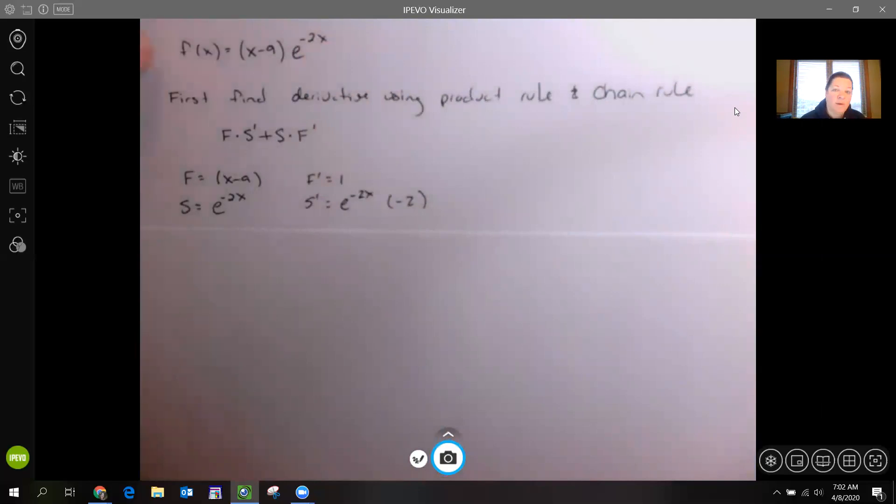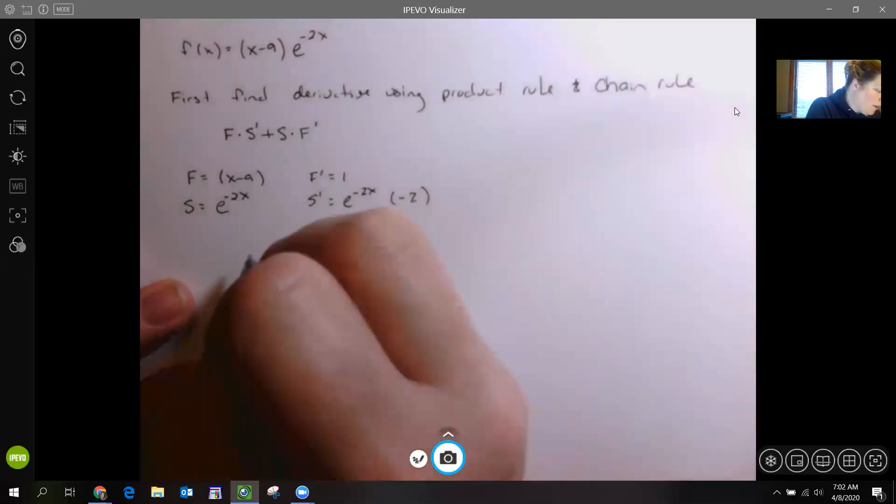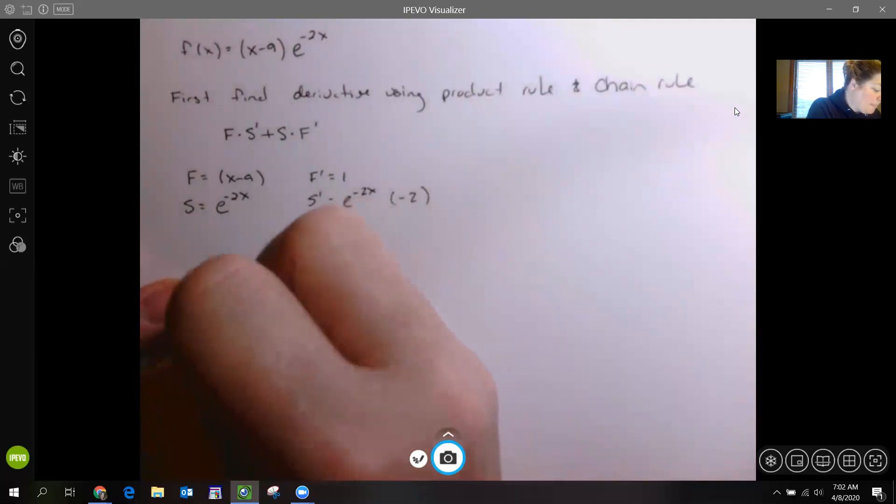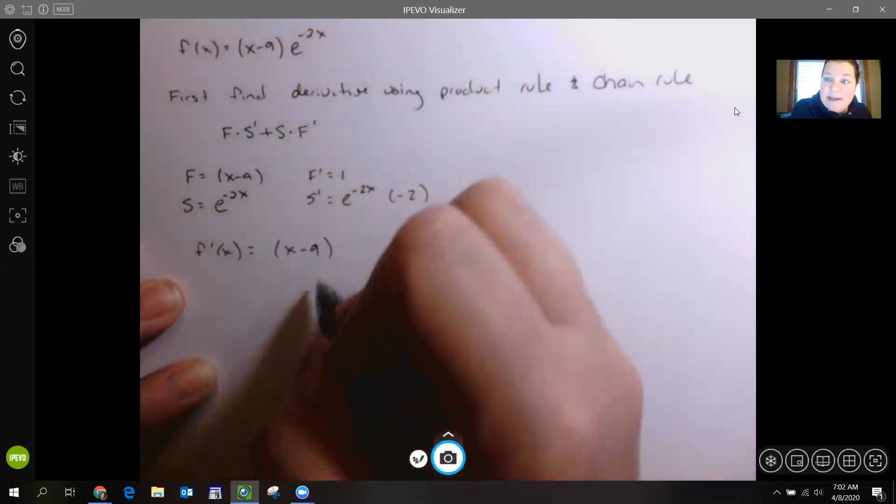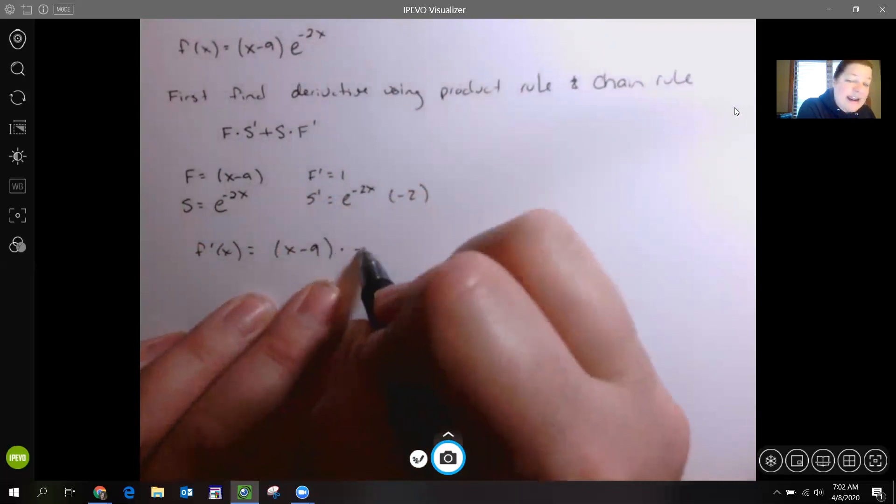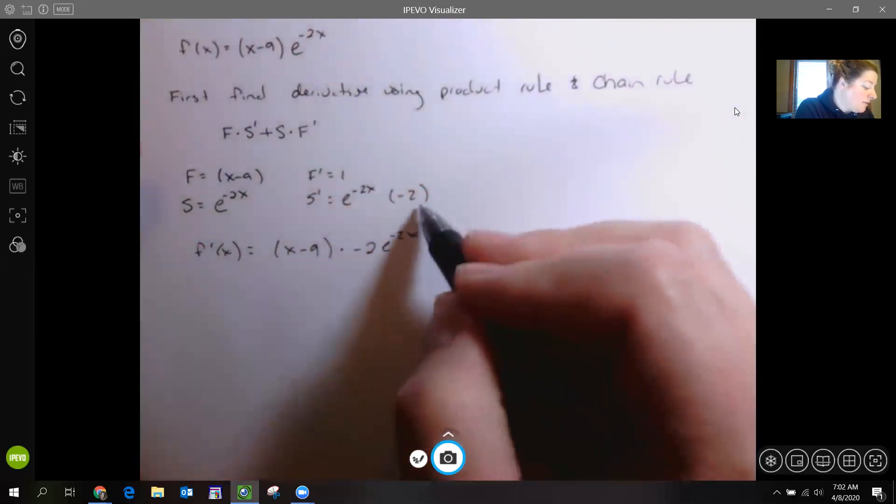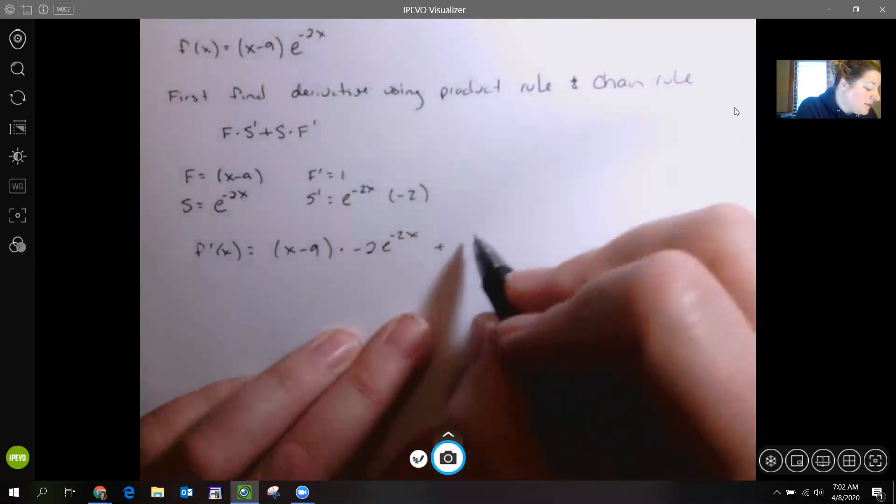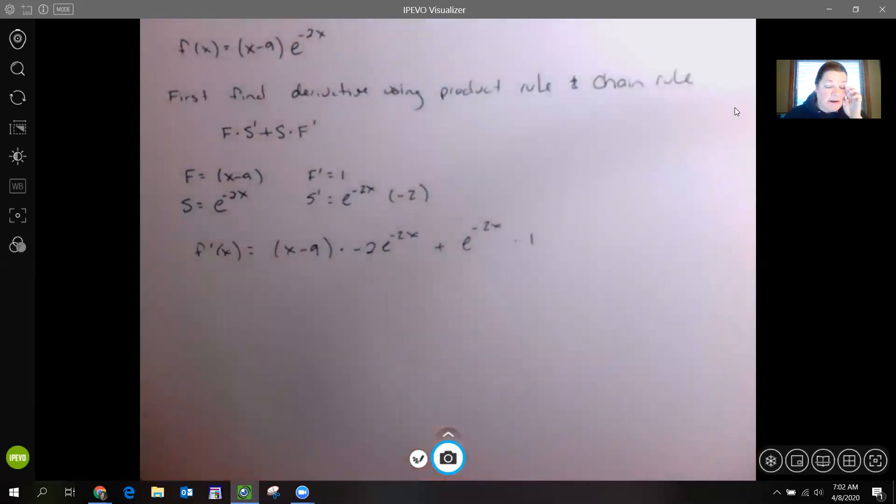Now let's go back and write the whole thing out, and then we have to find where it equals 0. That's going to help us with that critical value. From here, I am going to have the first, X minus 9, times the derivative of the second, so times negative 2 e to the negative 2x. First derivative of the second, plus the second times the derivative of the first.